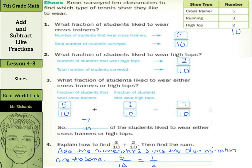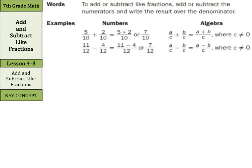Let's continue on, hopefully hiccup-free. So, our key concept today is basically adding and subtracting like fractions. Like fractions are fractions that have a common denominator. So, to add or subtract like fractions, add or subtract the numerators, which is the top part of the fraction, and write the result over the denominator.